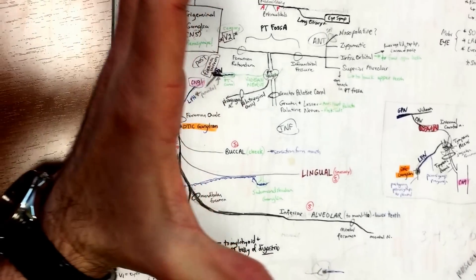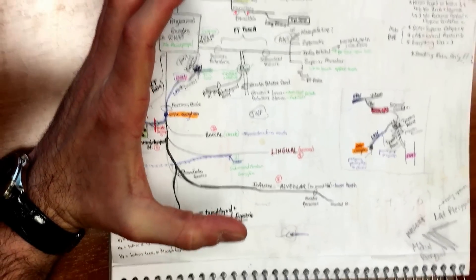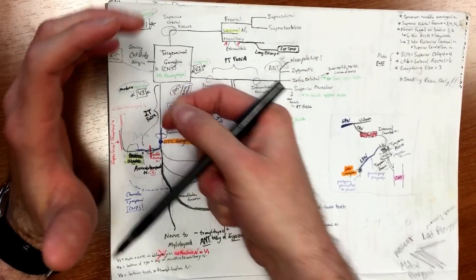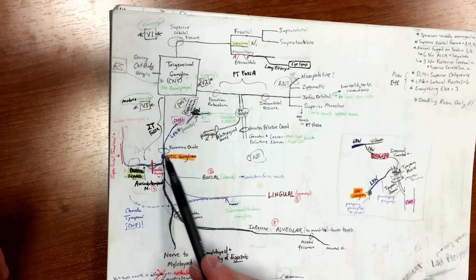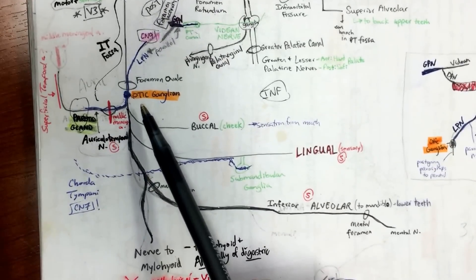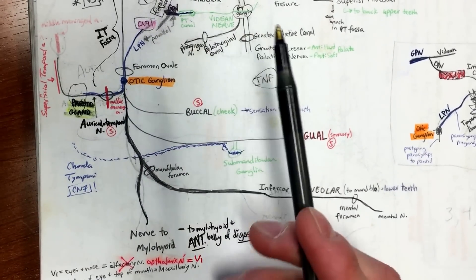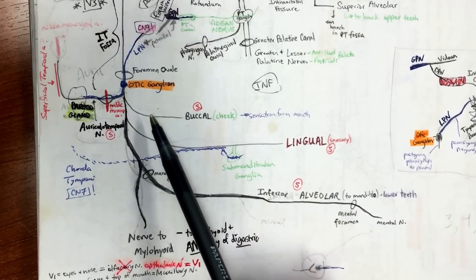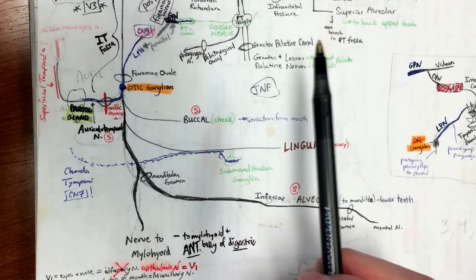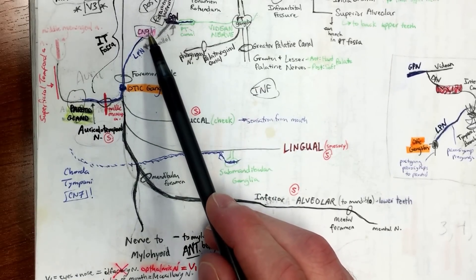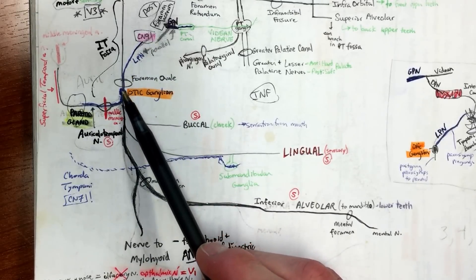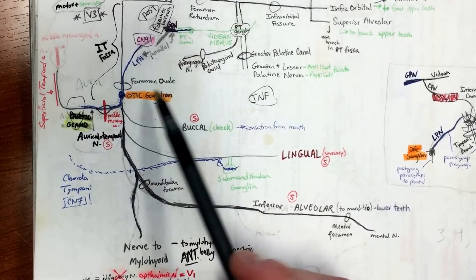The otic ganglion is on the opposite side of the face, so it can't really be tagged in lab — so you don't have to worry about identifying it, but you should understand the concept. Associate foramen ovale immediately with otic ganglion. We've mentioned before that otic ganglion is associated with cranial nerve nine, which should remind you of the lesser petrosal nerve. Lesser petrosal nerve goes through foramen ovale to get to the otic ganglion.